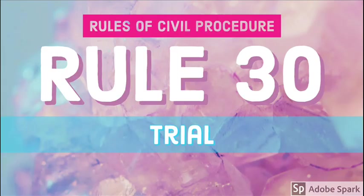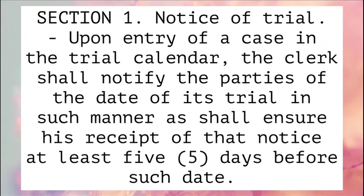Rule 30, Trial. Section 1, Notice of Trial. Upon entry of a case in the trial calendar, the clerk shall notify the parties of the date of its trial in such manner as shall ensure receipt of that notice at least five days before such date.